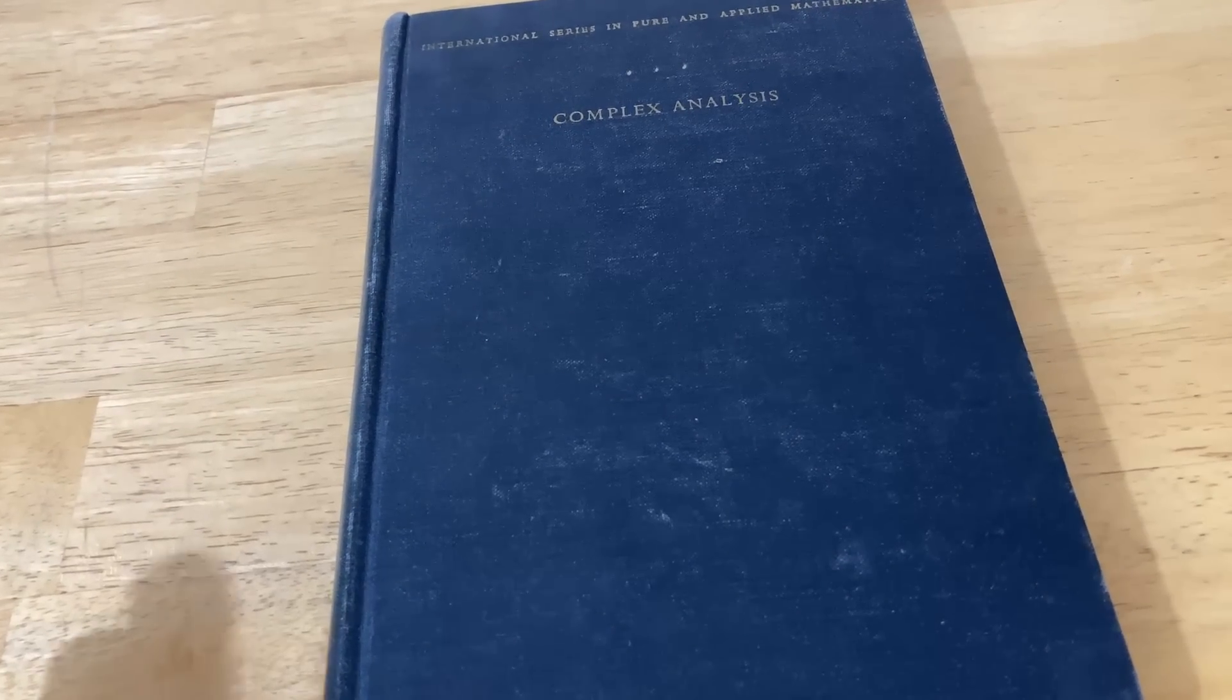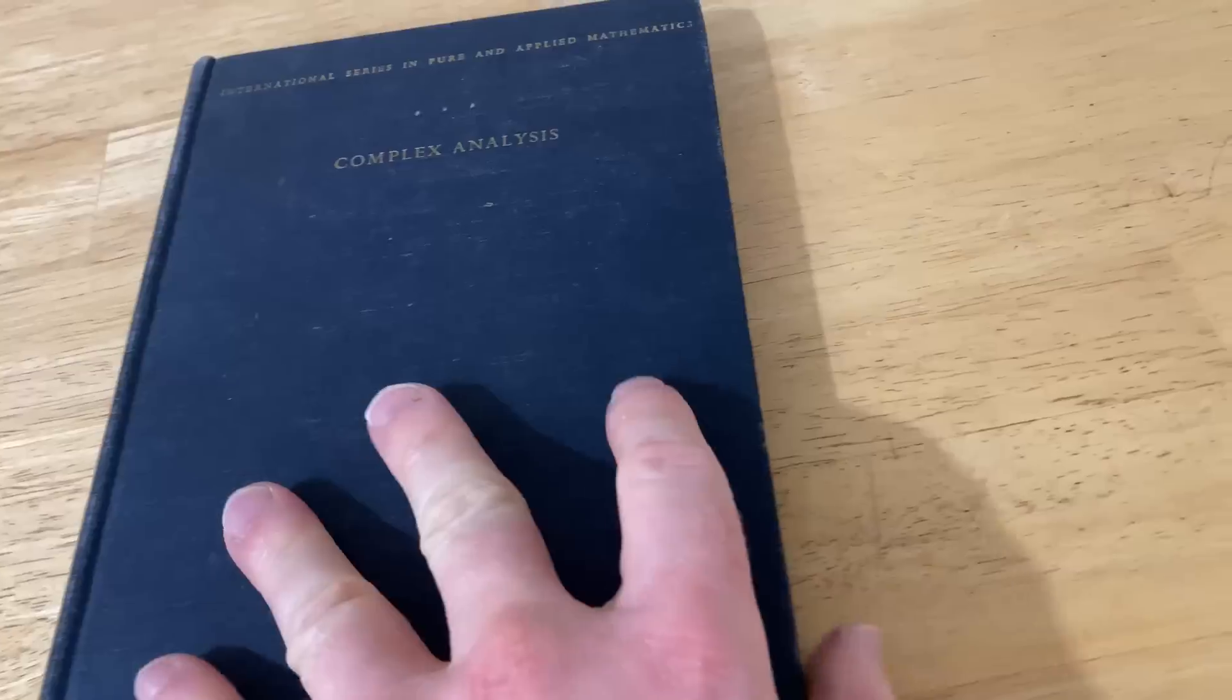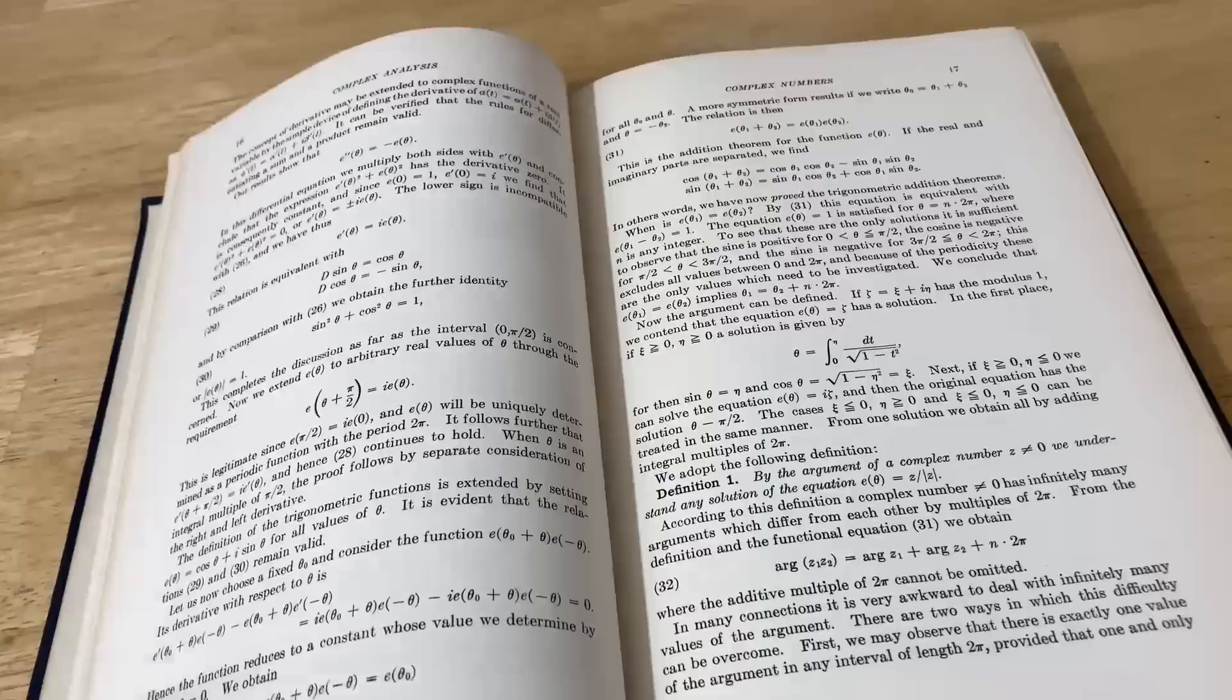Here we have another legendary book that is considered extremely rigorous. It is Complex Analysis by Alfors. And again, I picked books that are considered rigorous, perhaps elitist, right? Because they're so hard to read and they take so much work.